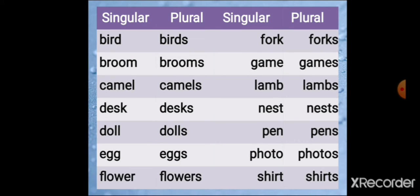Now let's look at more examples. Whenever we change singular into plural, we have to add 's' at the end of the singular noun. So: bird becomes birds, broom becomes brooms, camel becomes camels, desk becomes desks, doll becomes dolls, egg becomes eggs, flower becomes flowers, game becomes games, lamp becomes lamps, nest becomes nests, pen becomes pens, photo becomes photos, shirt becomes shirts. By adding 's' at the end of a singular noun, we can easily change it into a plural noun.